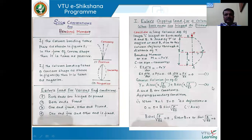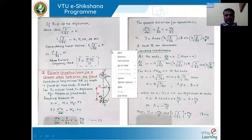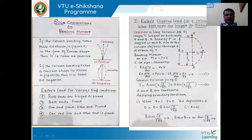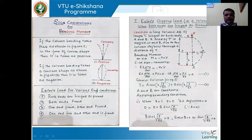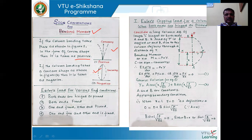Now, regarding sign conventions for bending moment: if the column bending takes place in a convex shape, it is taken as a positive value. Otherwise, if the column bending takes a concave shape, then the value is taken as negative. This sign convention is followed in calculating the bending moment when designing columns for effective service.